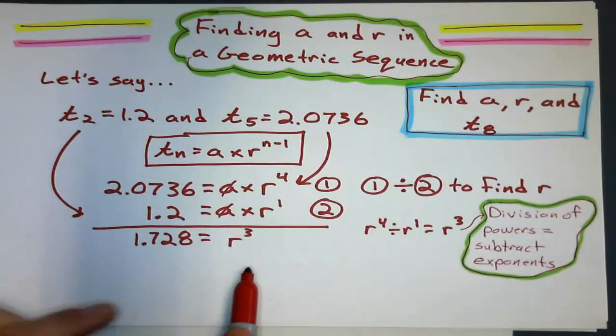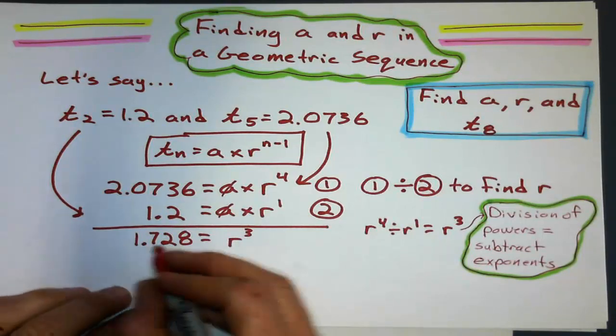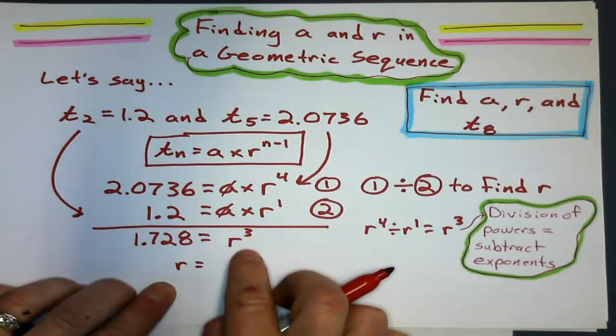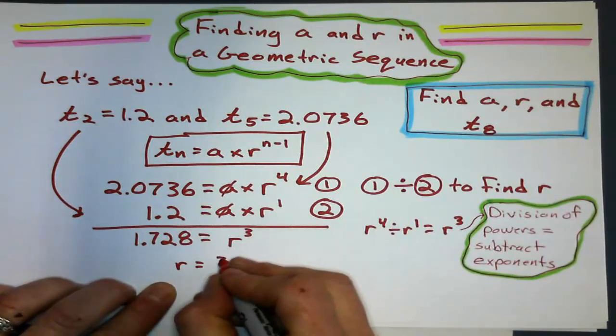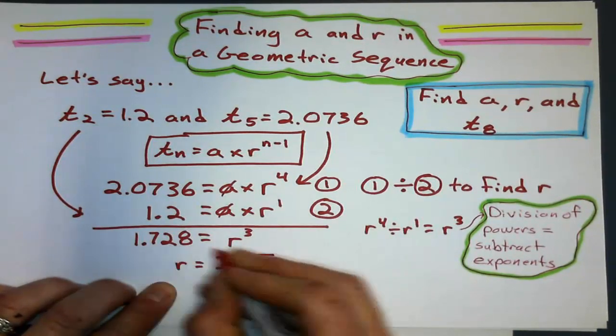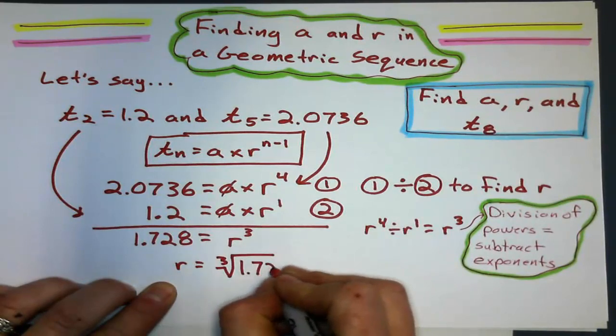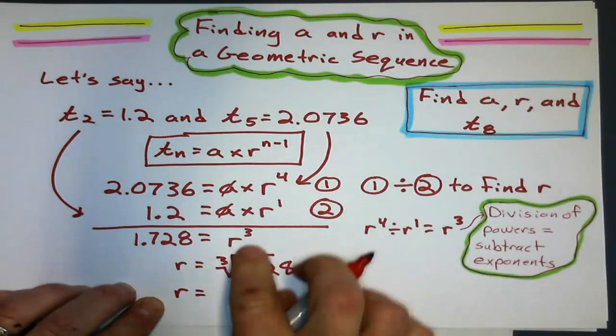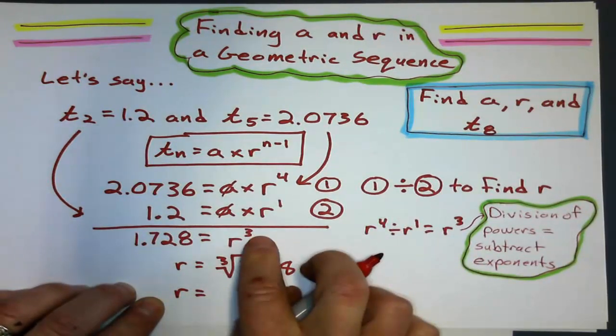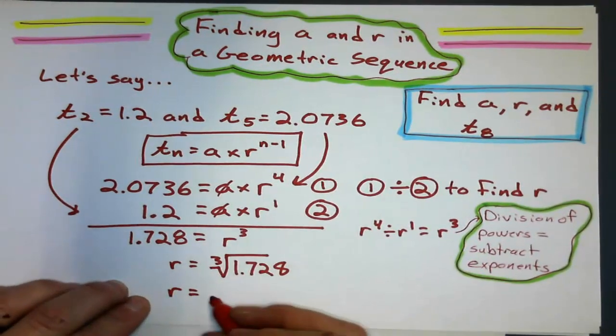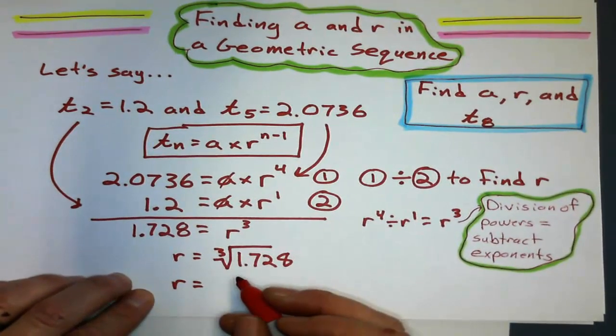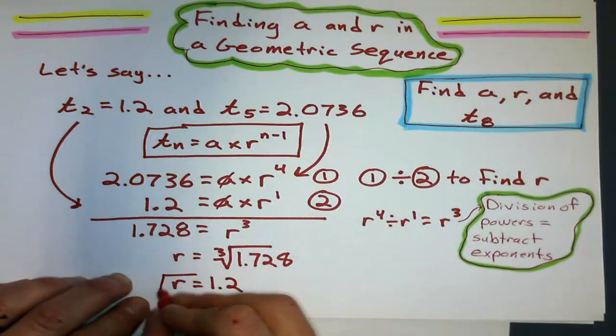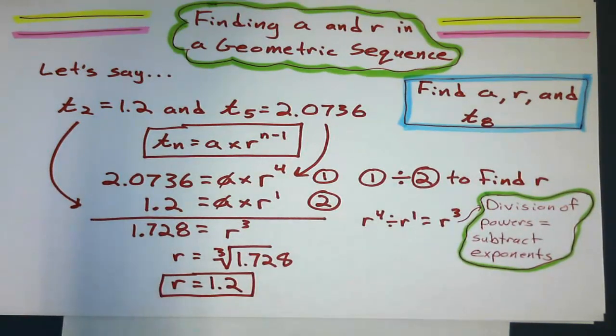So I can solve for the common ratio here quite easily, because if r³ is 1.728, and I want to find out what it is, I do the opposite of the third power, which is the cube root of 1.728. If this was to the fourth power, you do the fourth root. If it was to the fifth power, you do the fifth root. And I think the cube root gives me 1.2. Well, that's headway.